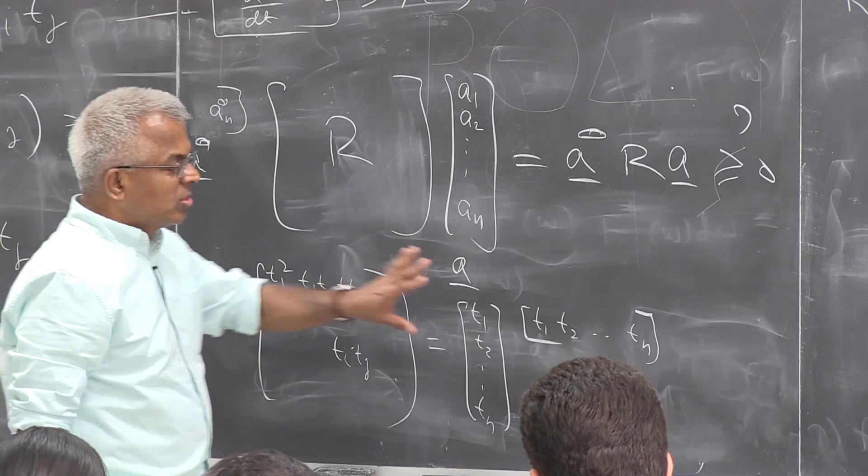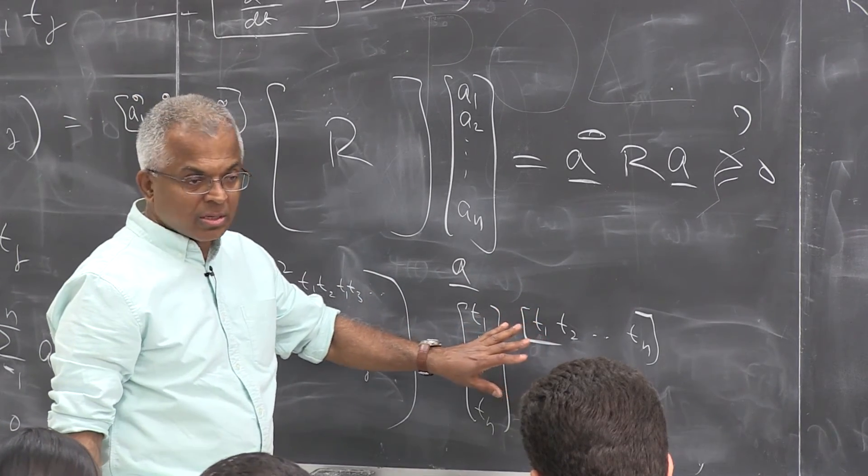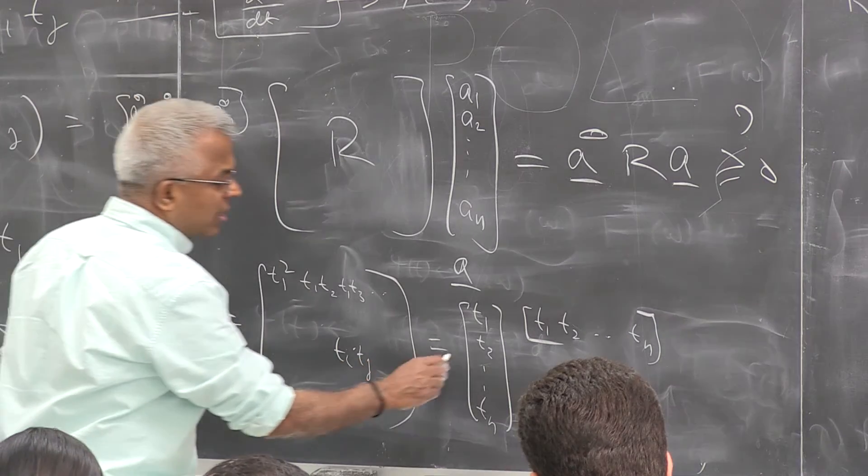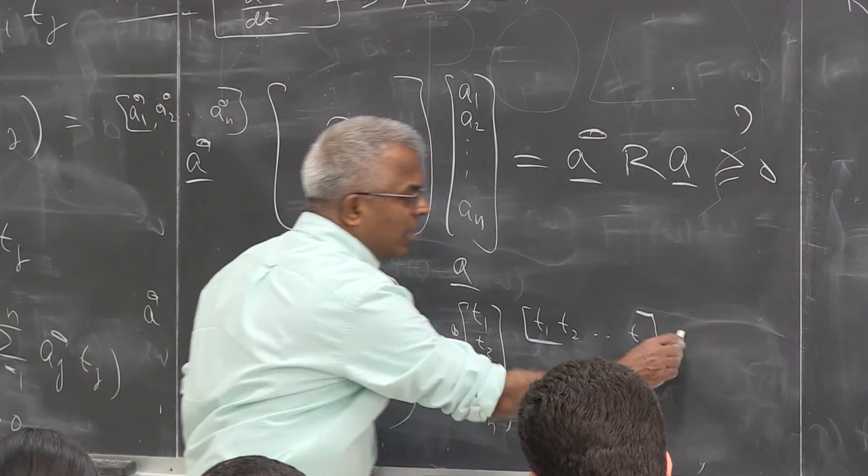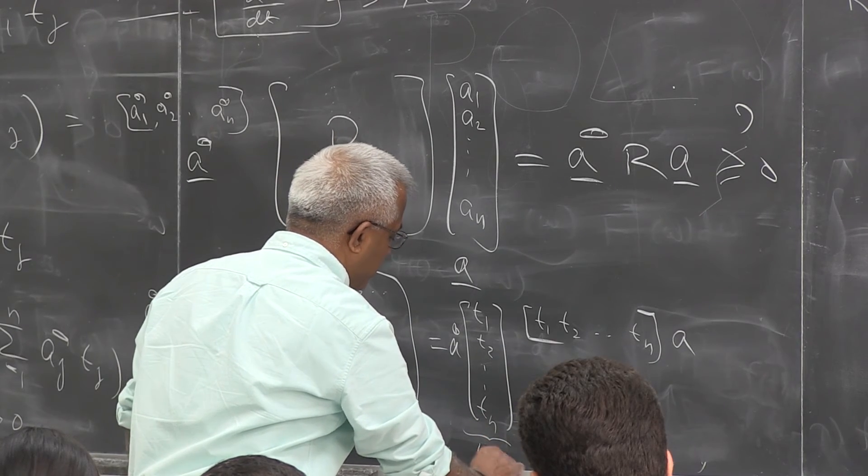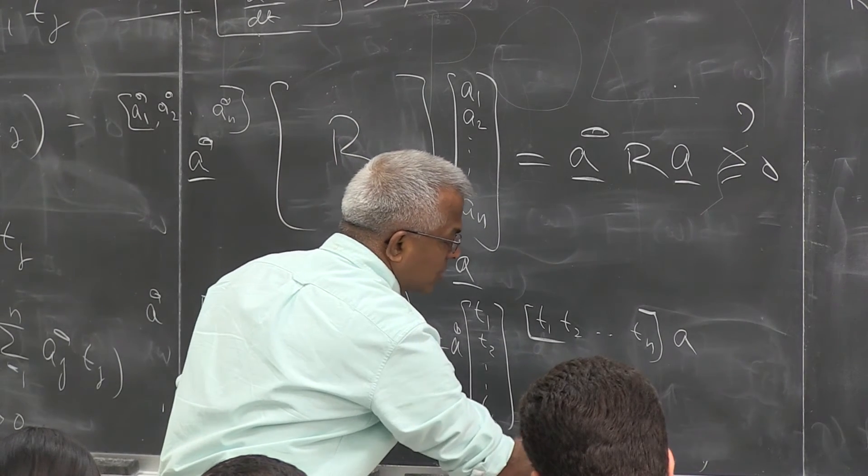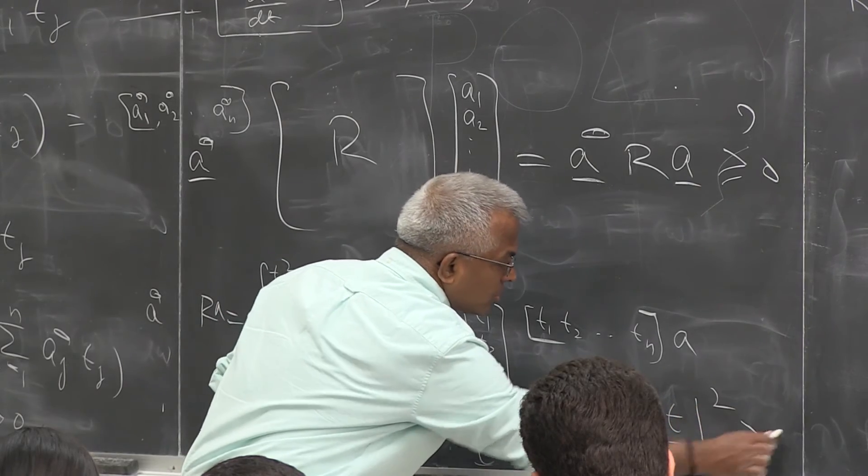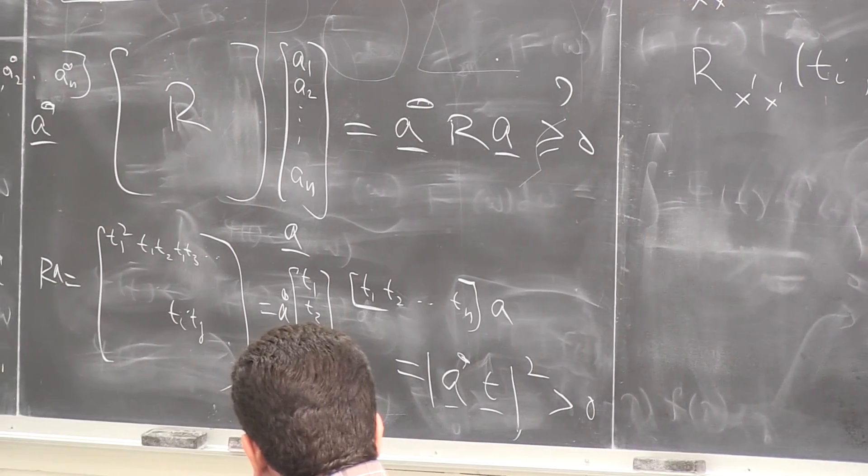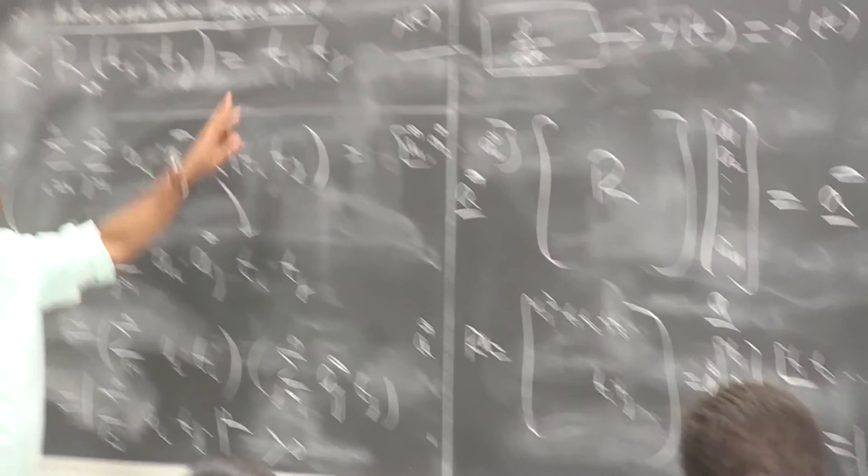So you see that this matrix is rank 1. And now, of course, if I do a star a here, I can do a star a here. But this, of course, I could, so if I call this to be a t vector, so this is a star t, absolute value squared, same result again. So this is an autocorrelation function.